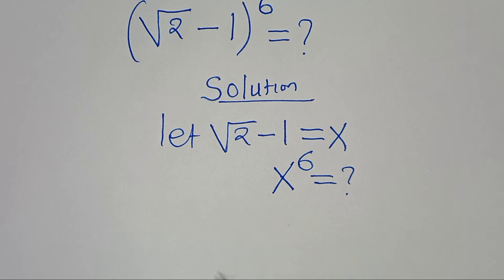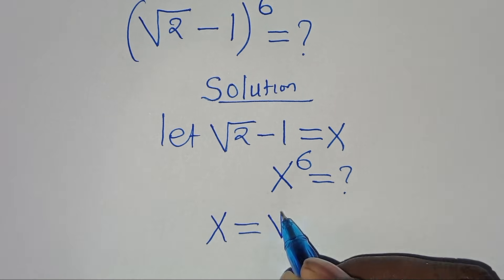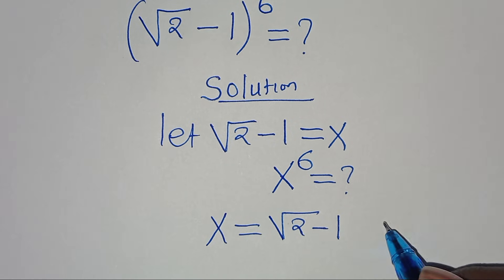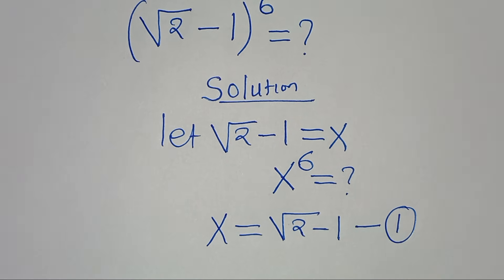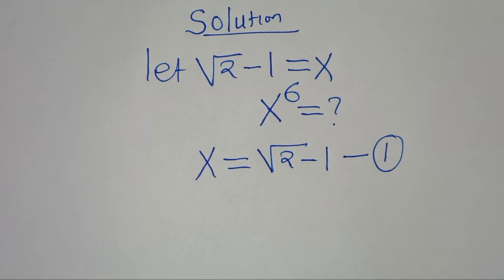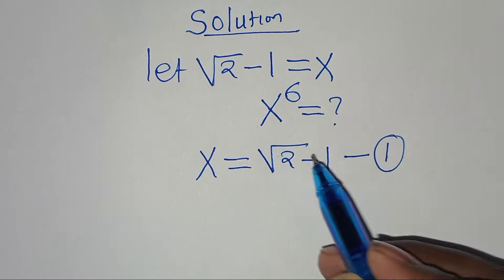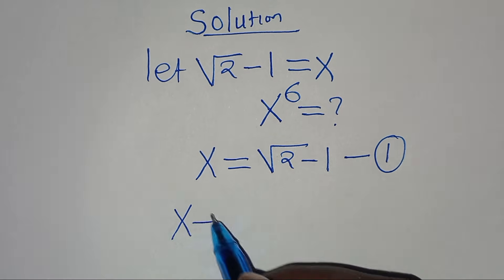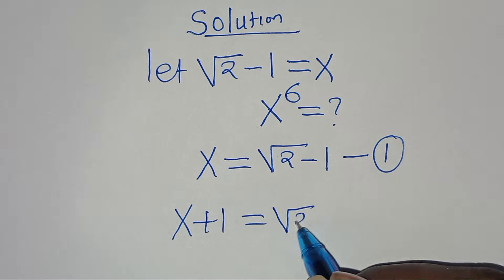We have that x is equal to square root of 2 minus 1. Let's call this equation 1. The next step is that we can take minus 1 to the left hand side so that we have x plus 1. This is equal to square root of 2.